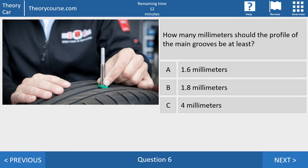Question six. How many millimeters should the profile of the main grooves be at least? 1.6 millimeters, 1.8 millimeters or 4 millimeters? The right answer is 1.6 millimeters at least. And also the spare tire must have a profile of at least 1.6 millimeters. And the CBR can also ask how many millimeters should be the profile of the main grooves of a tire of a trailer must be at least. And it's also 1.6 millimeters. So everything 1.6. Only if the CBR talks about a winter tire, then the right answer is 4 millimeters. So the minimum depth of a winter tire must be 4 millimeters.